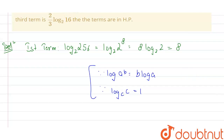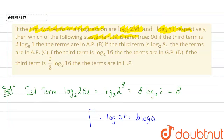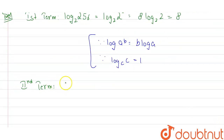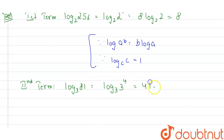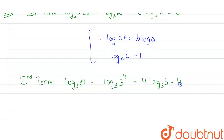Similarly, the second term is log base 3 of 81. I can write this as log base 3 of 3 to the power of 4, since 3⁴ = 81. This becomes 4·log base 3 of 3, which equals 4. So I now have two simplified terms: 8 and 4.